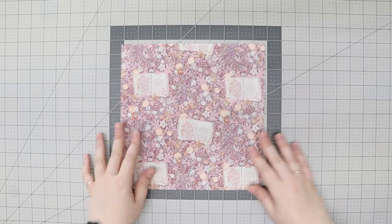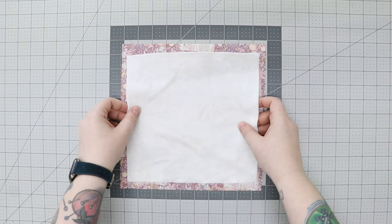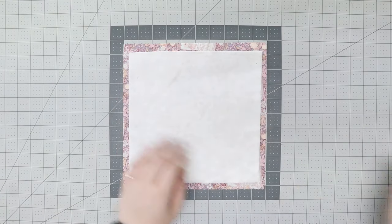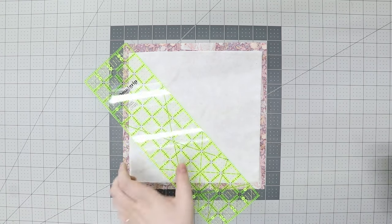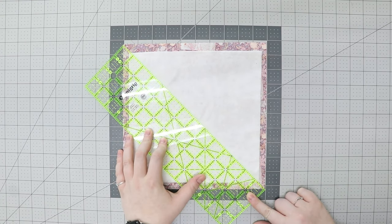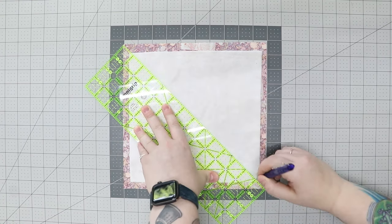Take one fabric square and lay it right side down on your cutting table followed by a square of batting centered in the middle. Draw an X from corner to corner and stitch on both lines. Do this for your other square.